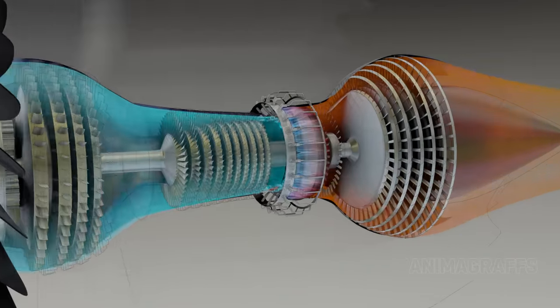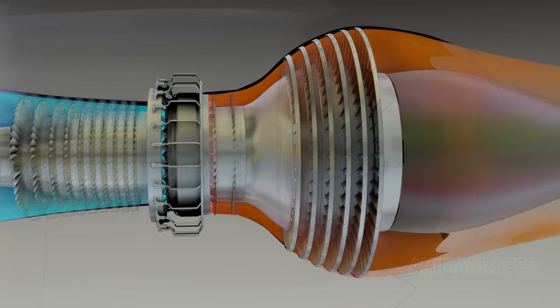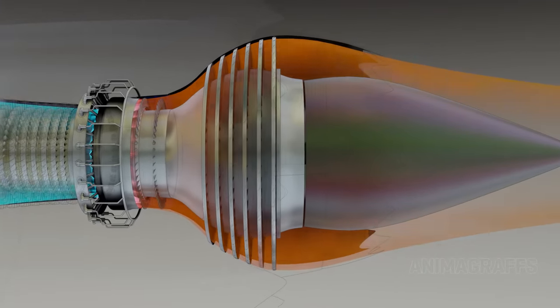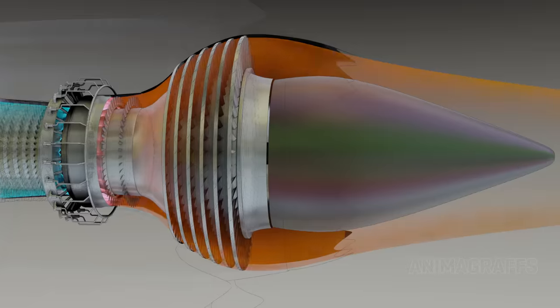Turbine fins get extremely hot. Some air from the compressor is diverted for cooling, and special coatings are used to keep temperatures down.